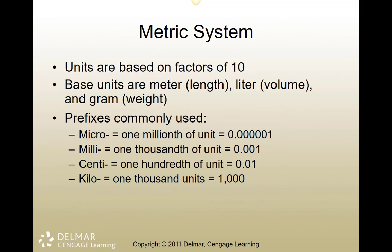The metric system is a much easier way. Instead of conversions like 60 grains to a dram and eight drams to an ounce, it's a much smoother system. Our base units in medicine are the meter for length, the liter for volume, and the gram for weight. Common prefixes are micro (one millionth), milli (one thousandth), centi (one hundredth), and kilo (one thousand).